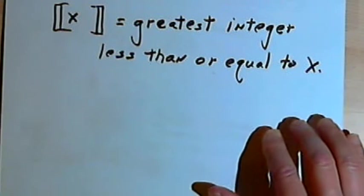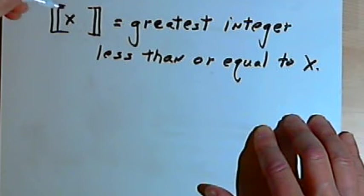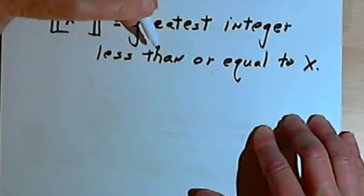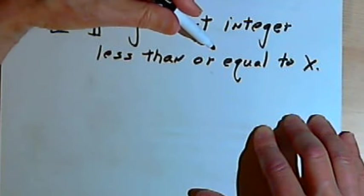The definition for the greatest integer function goes something like this: The greatest integer value of x equals the greatest integer less than or equal to x.